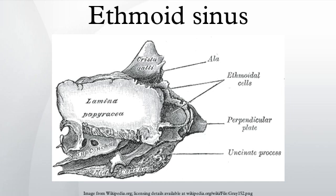The ethmoidal cells are divided into groups. The posterior group drains into the superior meatus, above the middle nasal concha; sometimes one or more cells open into the sphenoidal sinus. The middle group drains into the middle meatus of the nose on or above the bulla ethmoidalis. The anterior group drains into the middle meatus of the nose by way of the infundibulum.